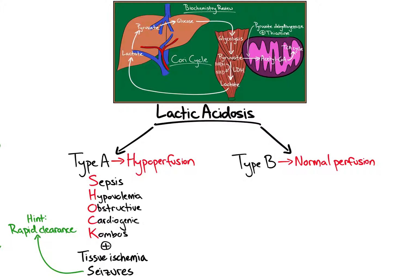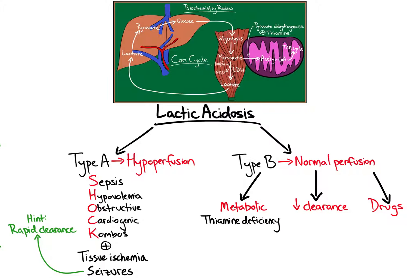Type B lactic acidosis — lactic acidosis in the setting of normal perfusion — can be broken down into three categories: metabolic, decreased clearance, and drugs. We will use our biochemistry chalkboard to diagram the rationale for each etiology. First, metabolic causes. Thiamine deficiency, or beriberi, causes lactic acidosis. Without thiamine as a cofactor, pyruvate dehydrogenase cannot convert pyruvate to acetyl-CoA, shunting pyruvate to lactate.